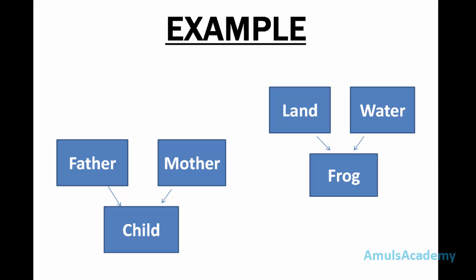Here is an example: land living animals and water living animals are two different classes, but a frog belongs to both — a frog is land living as well as water living. Similarly, father is a different class and mother is a different class, but a child contains both DNA. This is the example of multiple inheritance.